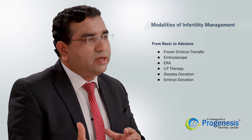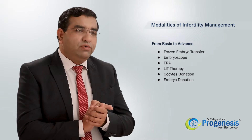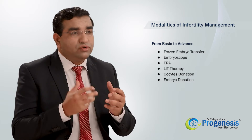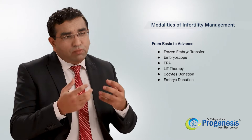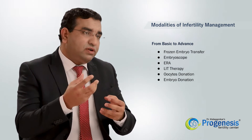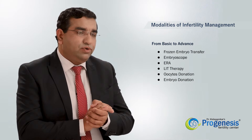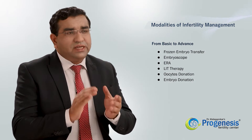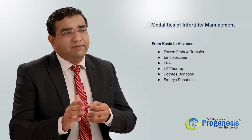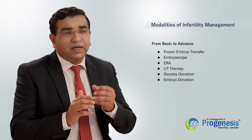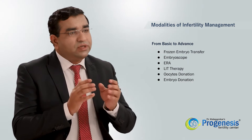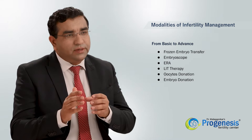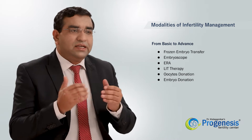We freeze all embryos and then in natural cycles perform the frozen embryo transfer. The embryoscope allows us to observe the normally dividing embryo and select it for transfer. In cases of multiple IVF failures, we can proceed with endometrial receptivity array (ERA) and lymphocyte immune therapy.